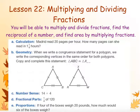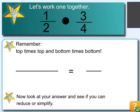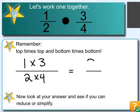Let's first look at 1 half times 3 fourths. When we are doing problems like this, remember when we're multiplying fractions, we don't need common denominators. We just need to multiply the numerators together — so 1 times 3 — and multiply the denominators, 2 times 4, so that we get 3 over 8. Then we always check to make sure our answer is in simplest form, which it is.